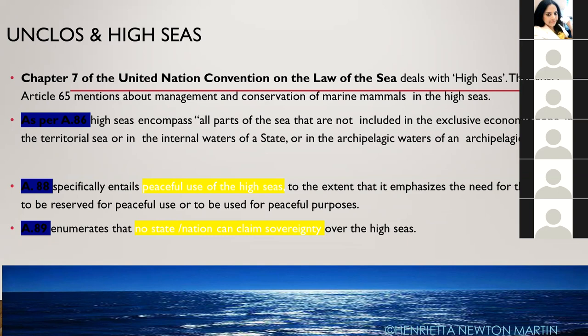Article 86 covers parts of the sea not included in the EEZ, the territorial sea, internal waters of a state, or the archipelagic waters of an archipelagic state. Chapter Seven begins with Article 86 onwards — Articles 86, 88, 89 — and Article 65 talks about the management and conservation of marine mammals in the high seas, such as whales and sea lions.